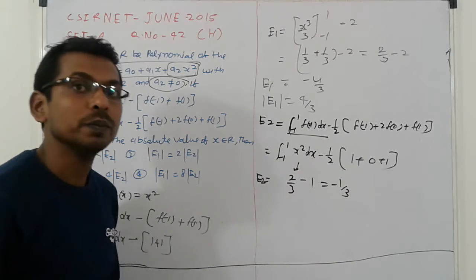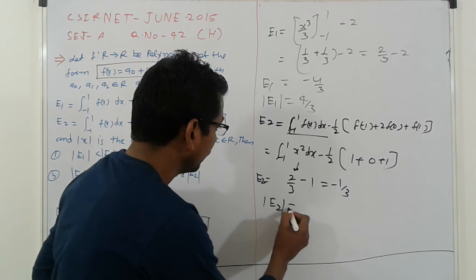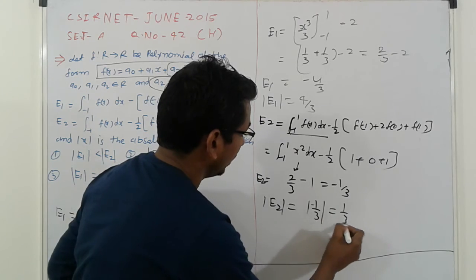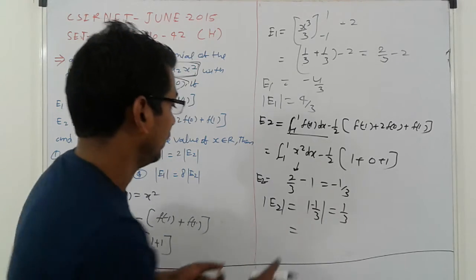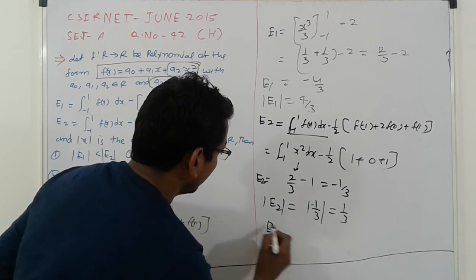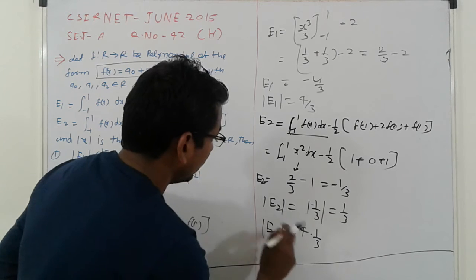That is the value of E2, the calculation of E2. So mod of E2 is 1/3. And go to E1: 4 times 1/3, so 1/3.